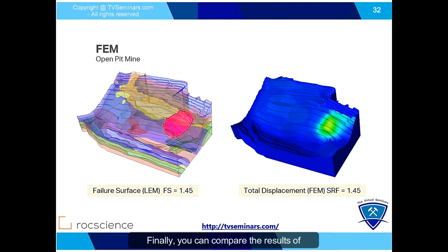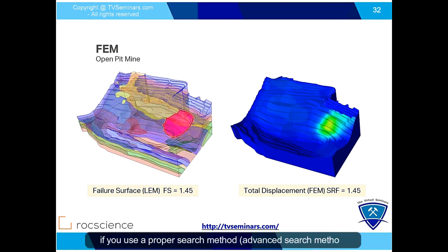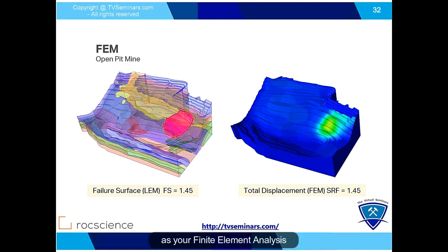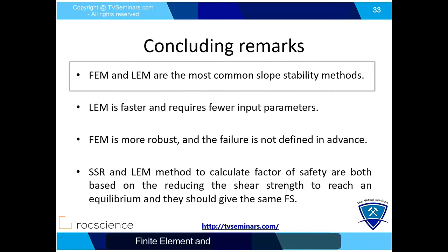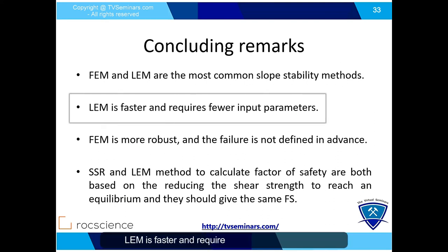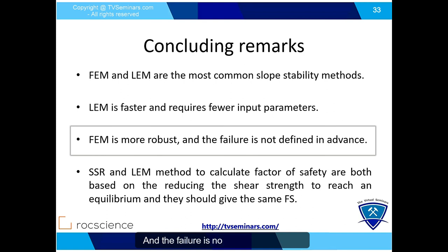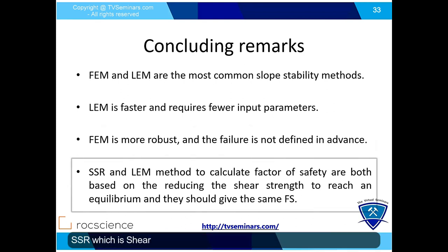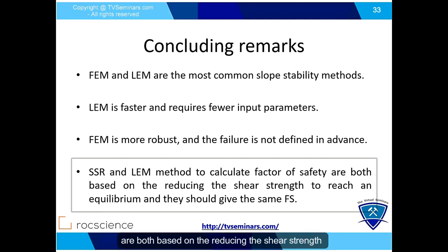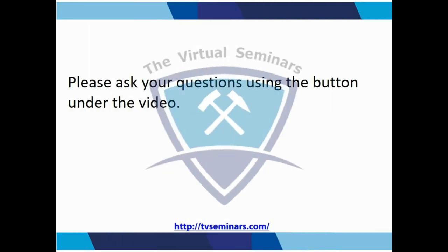Finally, you can compare the results from 3D limit equilibrium analysis to the 3D finite element analysis. As explained before, if you use a proper search method — an advanced search method — in the limit equilibrium method, the limit equilibrium results are comparable. Limit equilibrium is faster and requires fewer input parameters compared to finite element. However, finite element is more robust and the failure mechanism is not assumed in advance. At the end, the SSR — shear strength reduction — analysis and the limit equilibrium method are both used to calculate the factor of safety.